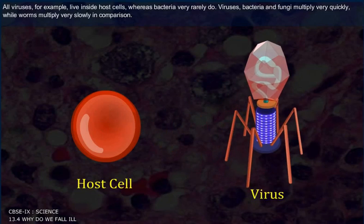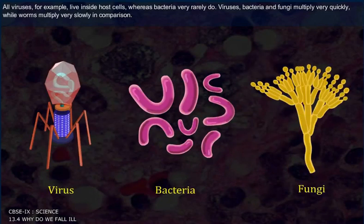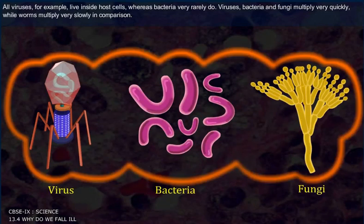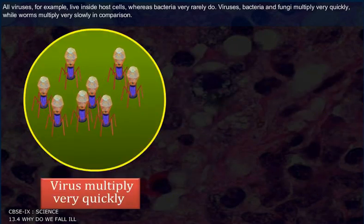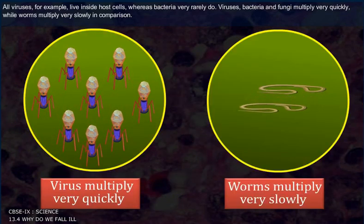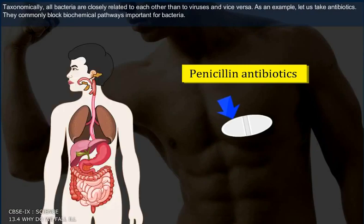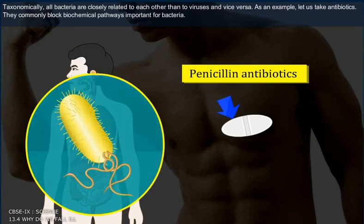All viruses live inside host cells, whereas bacteria very rarely do. Viruses, bacteria, and fungi multiply very quickly while worms multiply very slowly in comparison. Taxonomically, all bacteria are more closely related to each other than to viruses, and vice versa.